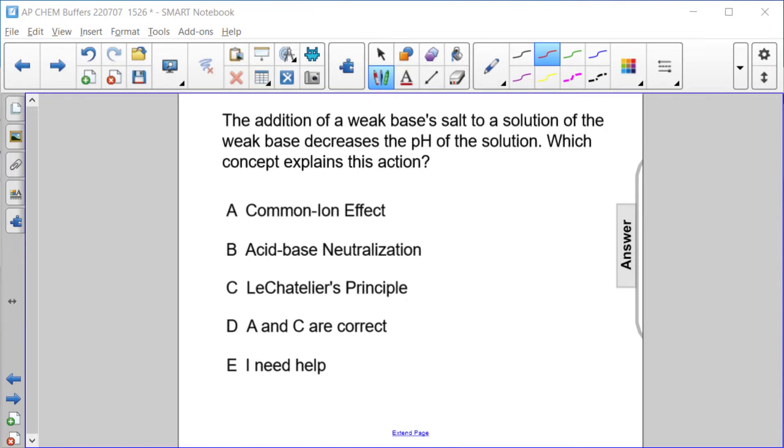The addition of a weak base's salt to a solution of a weak base will shift the equilibrium to the left due to Le Chatelier's principle and therefore decrease the pH, which is known as the effect on the pH as a result of adding a common ion.